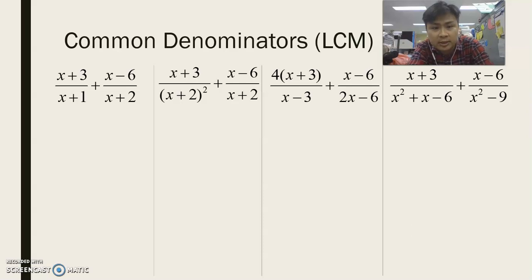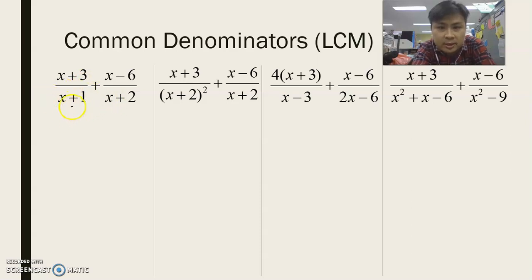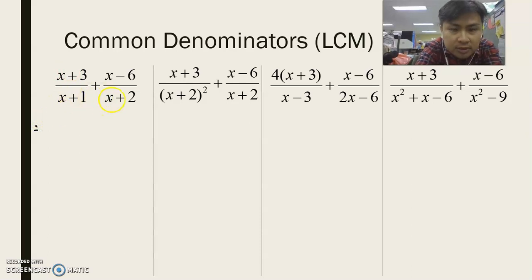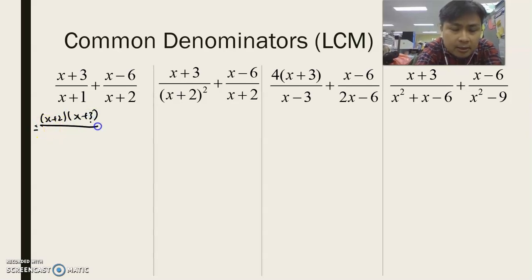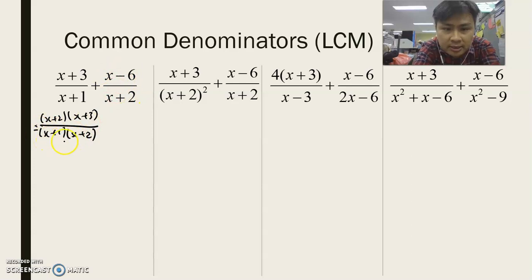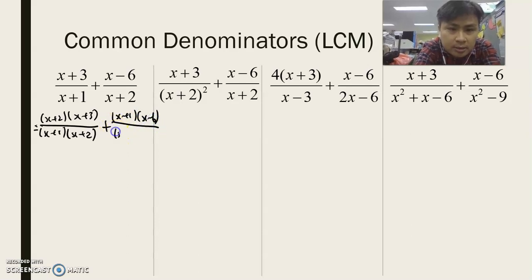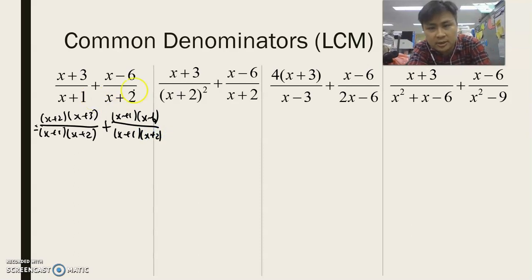Let's take a look at other possible questions. For this kind of question, we notice that there is no common factor for (x + 1) and (x + 2). So in order to get a common denominator, the common denominator will be (x + 1)(x + 2). For the first fraction, I'm missing (x + 2), so I will multiply by (x + 2). Similarly, I'm missing (x + 1) in the second fraction, so I'll multiply by (x + 1) to get the common denominator.